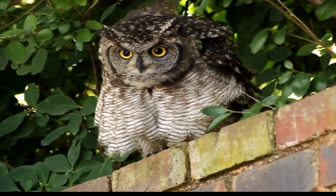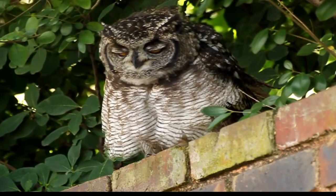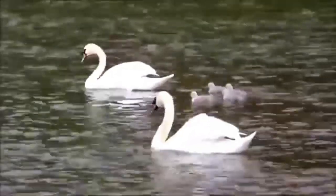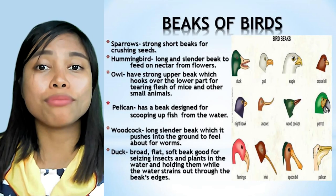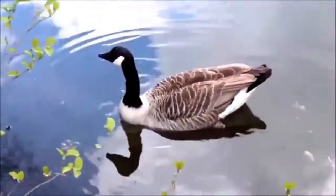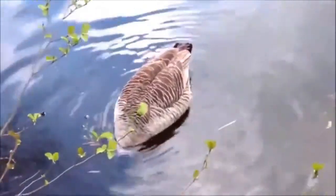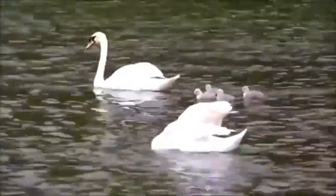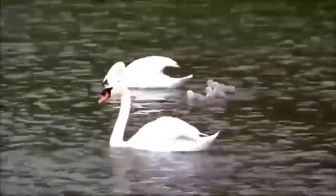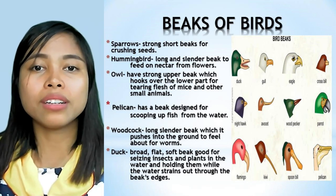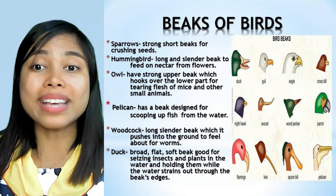Birds have beaks adapted to their diet. Sparrows have strong short beaks for crushing seeds, while the hummingbird has a long slender beak to feed on nectar from flowers. The owl has a strong upper beak that hooks over the lower part for tearing flesh of mice and small animals. The pelican has a beak designed for scooping up fish from water. The woodcock has a long slender beak which it pushes into the ground to feed on worms. The duck has a broad flat soft beak for seizing insects and plants in the water. When diving for fish, a pelican can come up with three gallons of water along with fish.